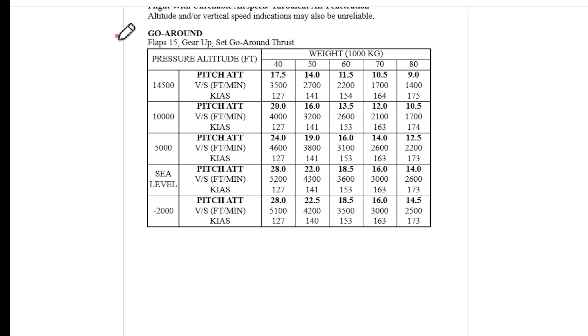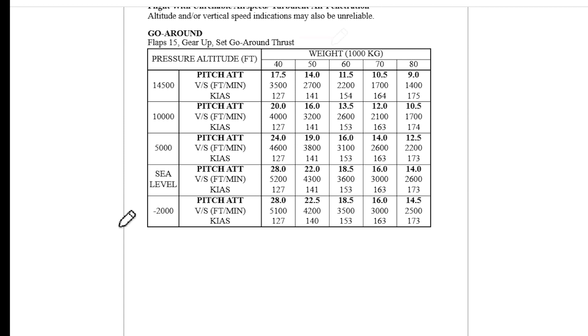We also have the go-around table, assuming flaps 15, gear up, and set go-around thrust. Same thing, it goes from minus 2,000 to 14,500 feet.